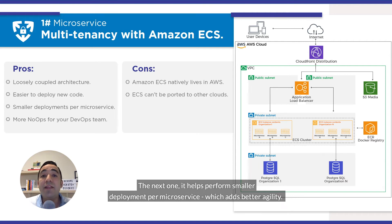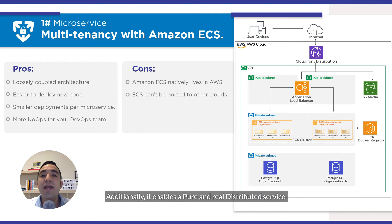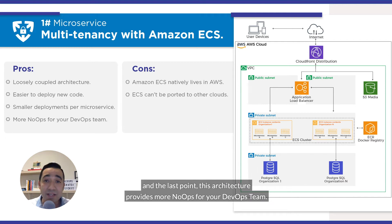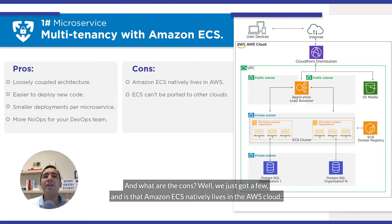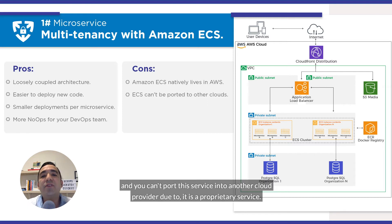It helps perform smaller deployments per microservice, which adds better agility. Additionally, it enables a pure and real distributed service. And the last point, this architecture provides more no-ops for your DevOps team. As for the cons, Amazon ECS natively lives in the AWS cloud, and you cannot port this service to another cloud provider as it is a proprietary service.